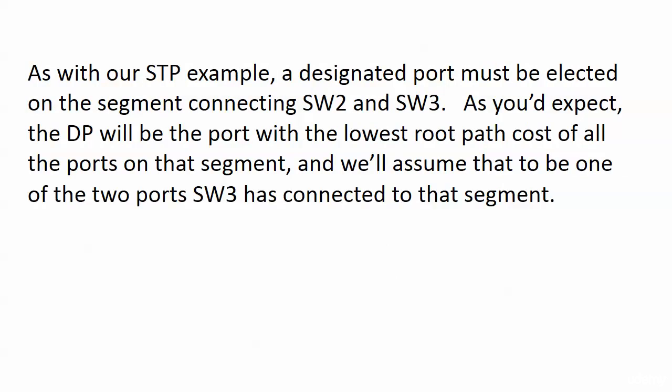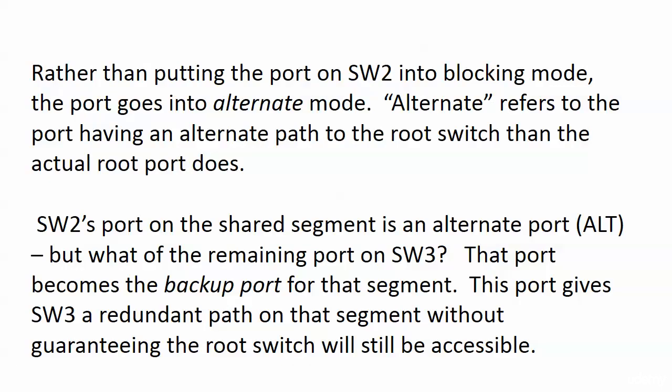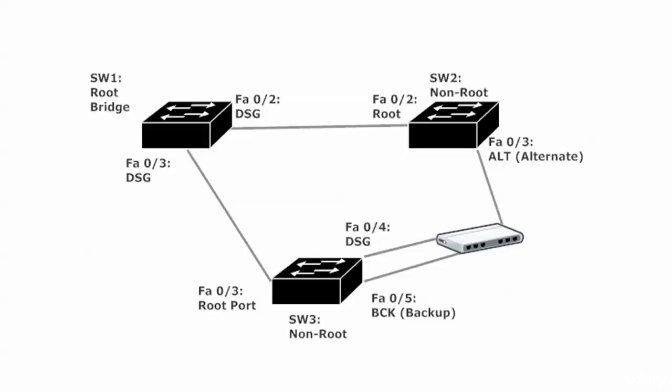The two switches have an election, and the designated port will be the port with the lowest root path cost of all the ports on that segment. We're going to assume that to be one of the two ports switch three has connected to that segment. So Fast Ethernet 4 is now the designated port for the shared segment between switches two and three. With RSTP, instead of putting switch two's port into blocking mode, the port goes into what we call alternate mode — it becomes an alternate port. Alternate here refers to the fact that this port has an alternate path to the root switch than the one the actual root port does.